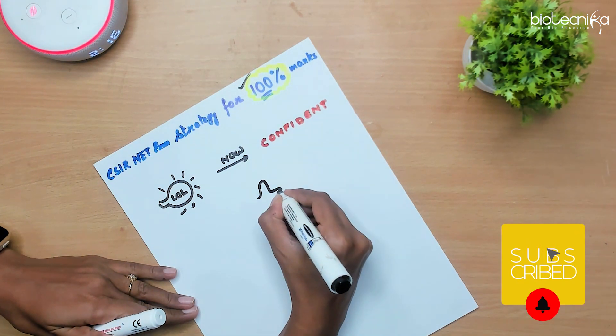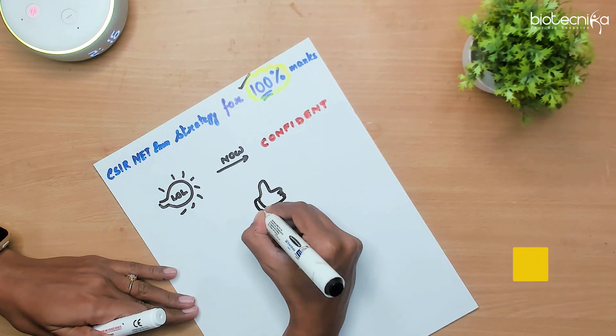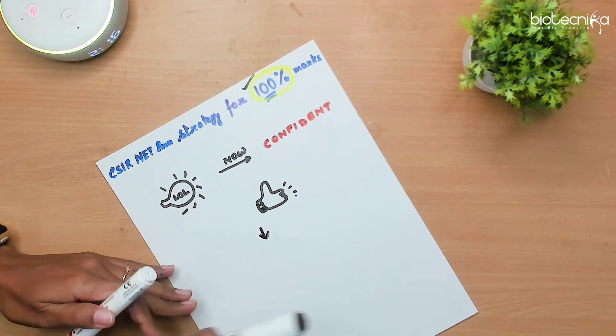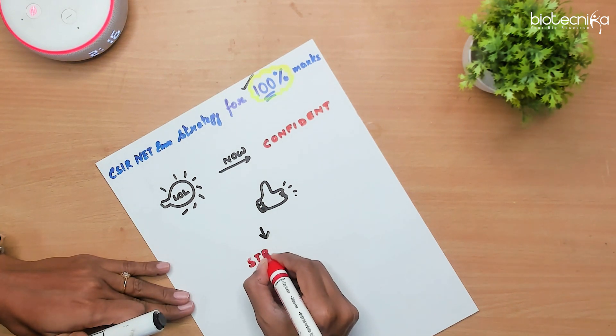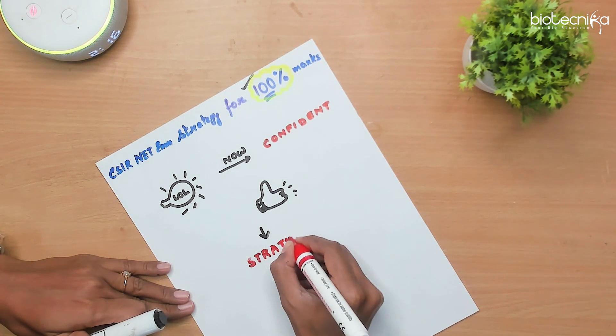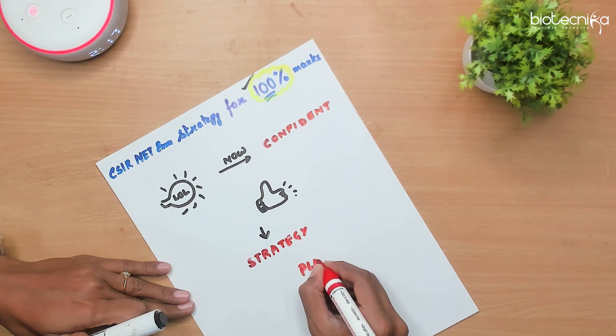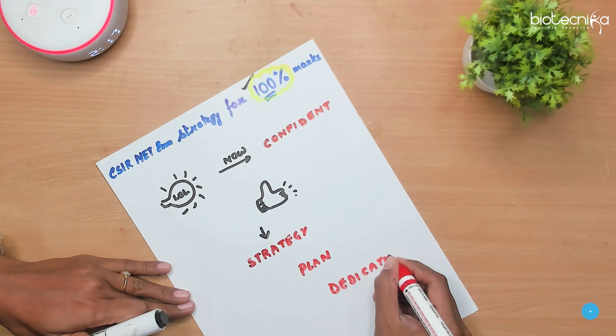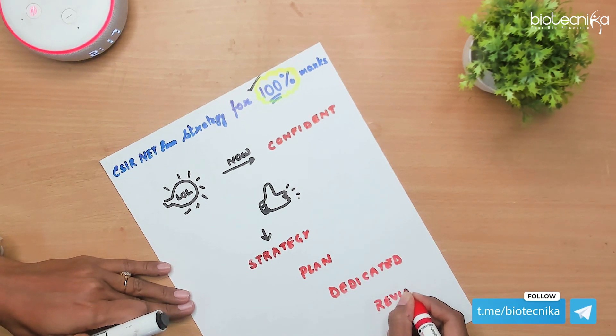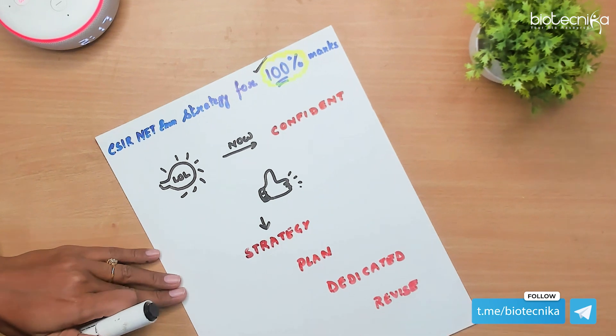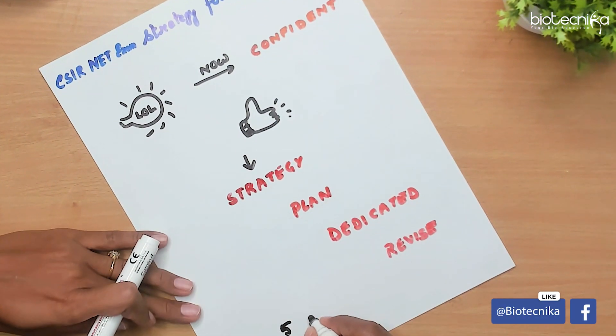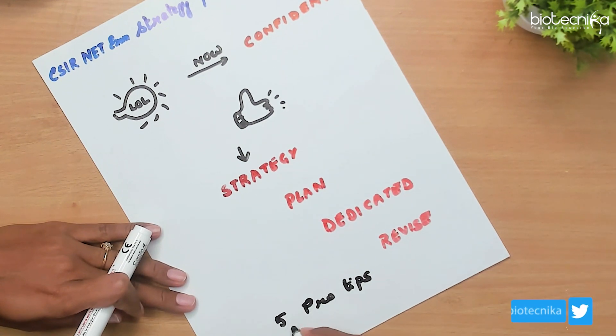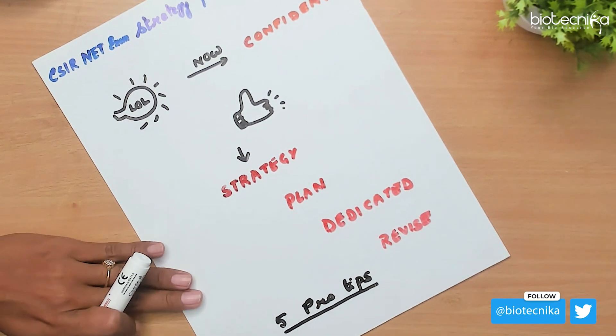Well, now I am pretty confident that yes, a student if he gives his 100%, his or her 100%, then definitely it will be a guaranteed success. No one can actually stop them from scoring nothing less than 100%. But what do we need for that? We need some kind of strategy, certain kind of plan. We need to be dedicated, we need to revise. So today I'm going to show you five pro tips which are definitely going to help you clear this exam and not only clear but come out with flying colors.